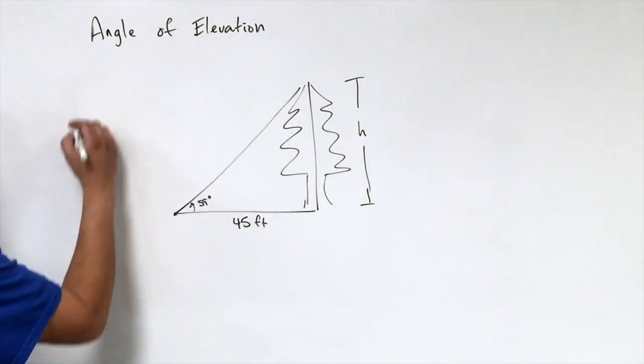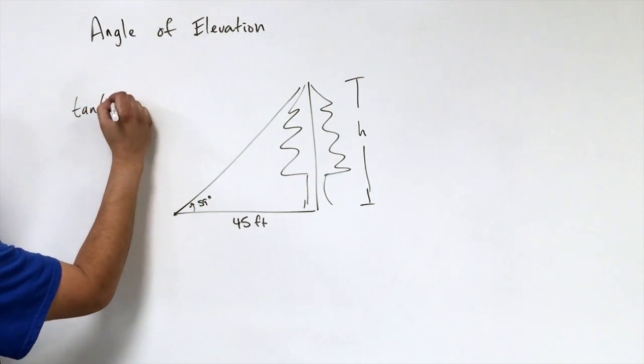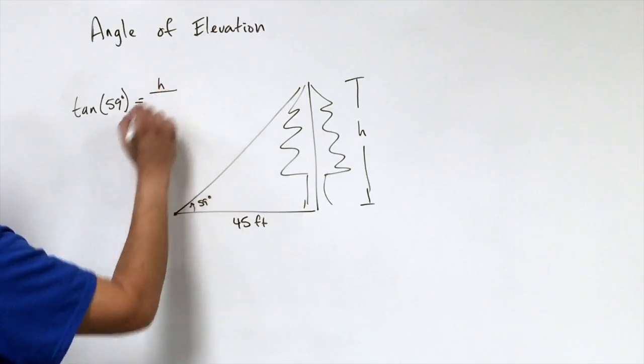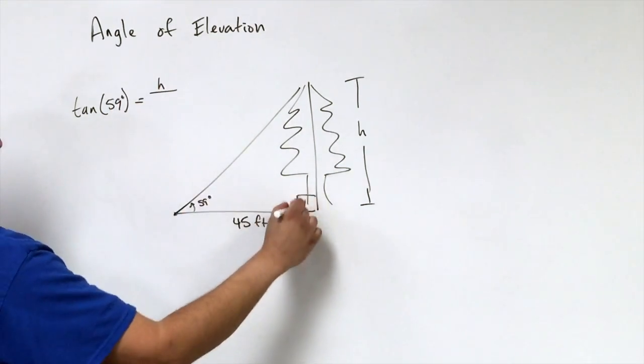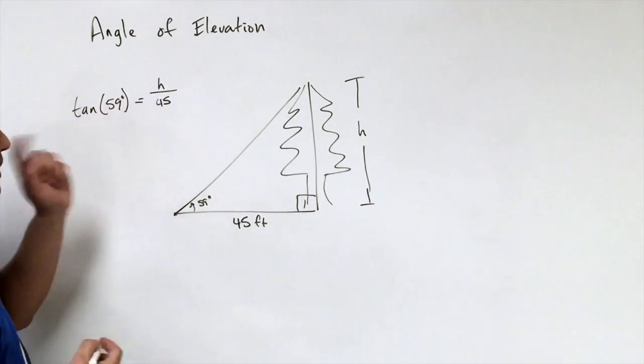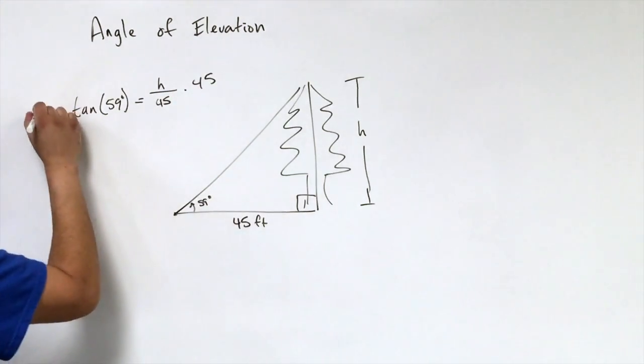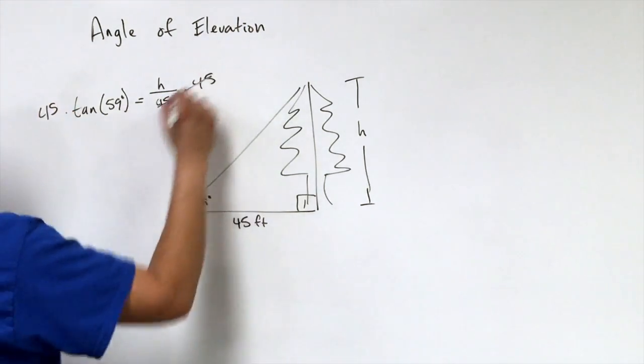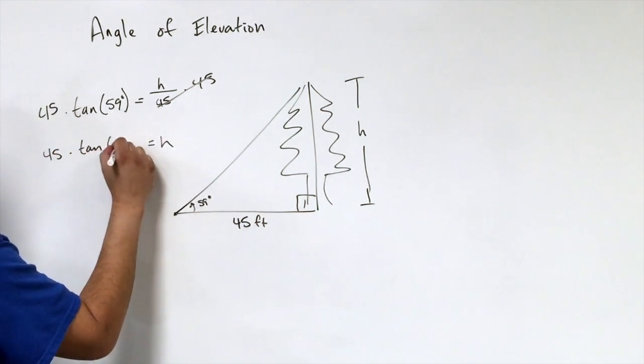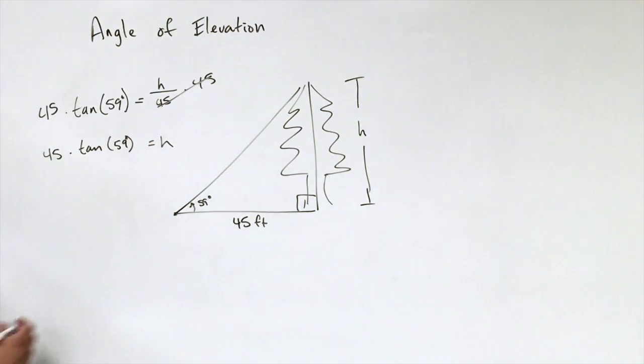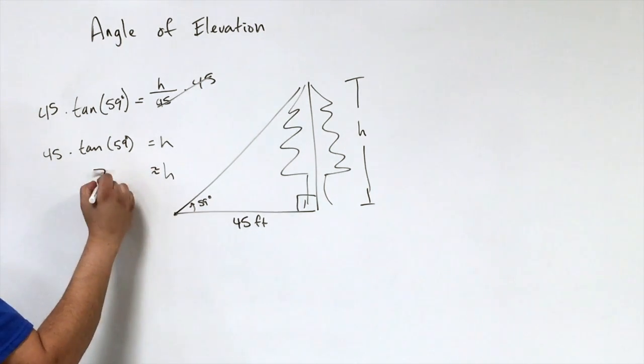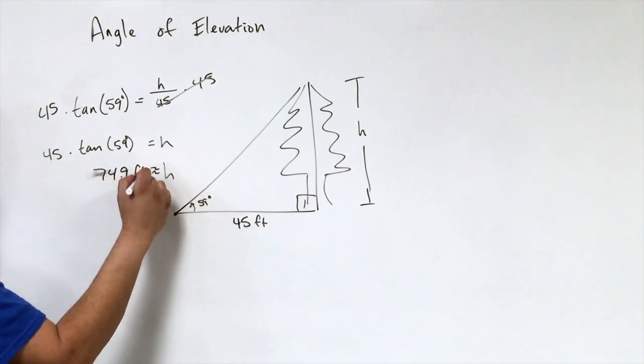I would say that the tangent of 59 degrees is going to equal the opposite leg over the adjacent leg. I want to solve for the height, which means I'm going to have to multiply both sides by 45. So my height is equal to 45 times the tangent of 59 degrees, which is going to be about 74.9 feet.